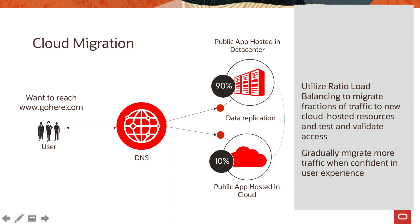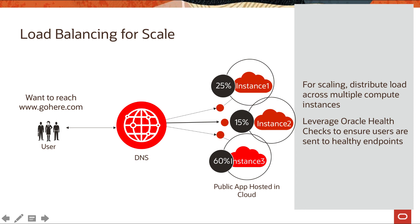Cloud migration is another common use case where you use the load balancing functionality within traffic management policies. You have the ability to load balance your traffic based upon the weight you provide to individual endpoints. For instance, if you're migrating your application to the cloud and still want ninety percent of your traffic sent to your on-premise primary site, you can send just ten percent of client requests to your workload inside the public cloud using the load balancing traffic management policy.